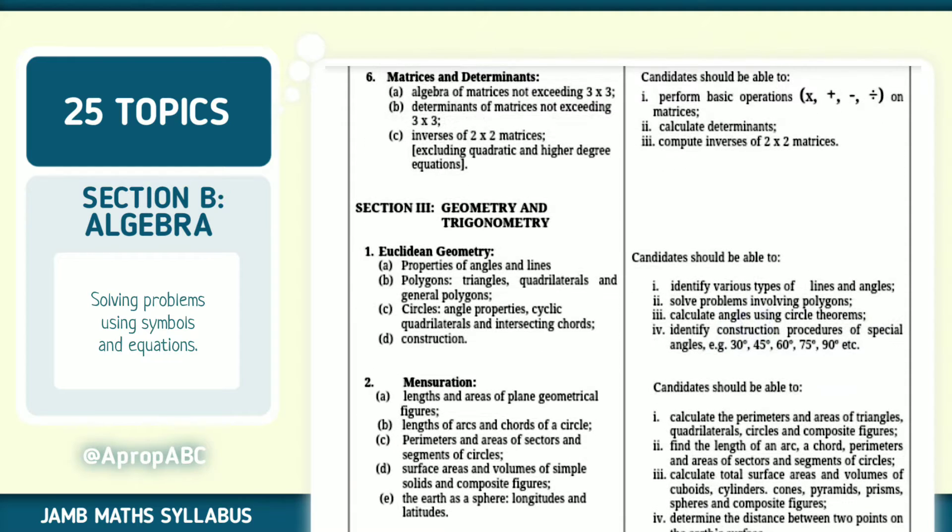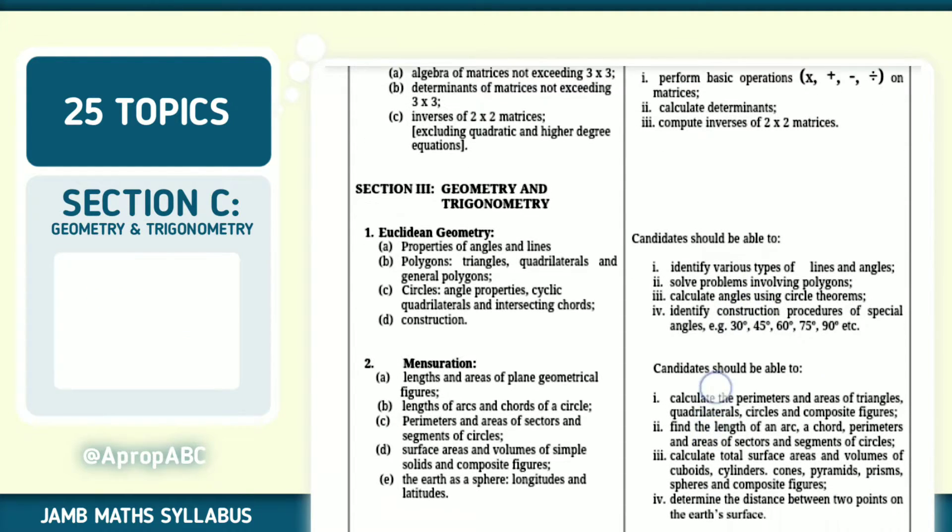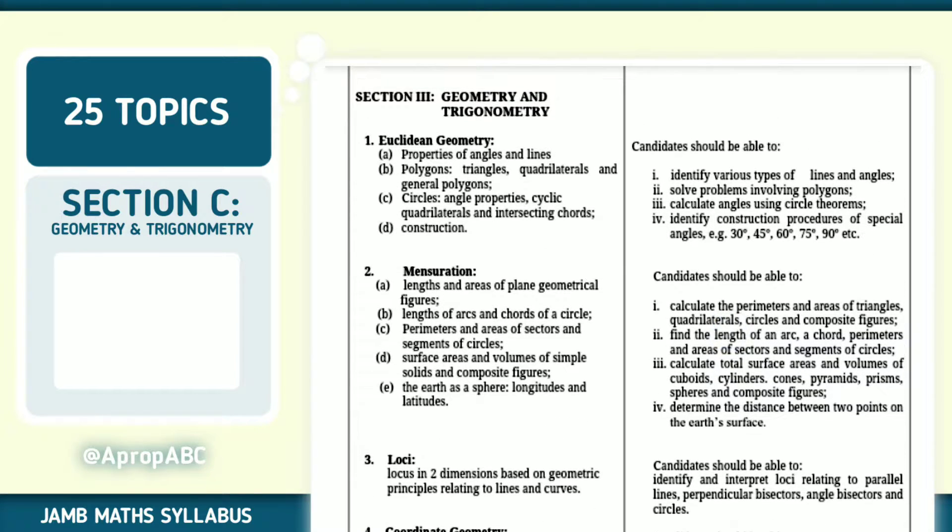The third section out of five is Geometry and Trigonometry. They are related in a way but still kind of different. Geometry is the study of shapes and spaces, which are used by architects to design buildings, bridges, and to build machines.